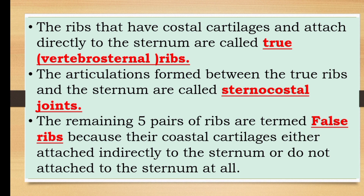The ribs that have costal cartilages and attach directly to the sternum are called true ribs, or vertebrosternal ribs. The articulations formed between the true ribs and the sternum are called sternocostal joints.